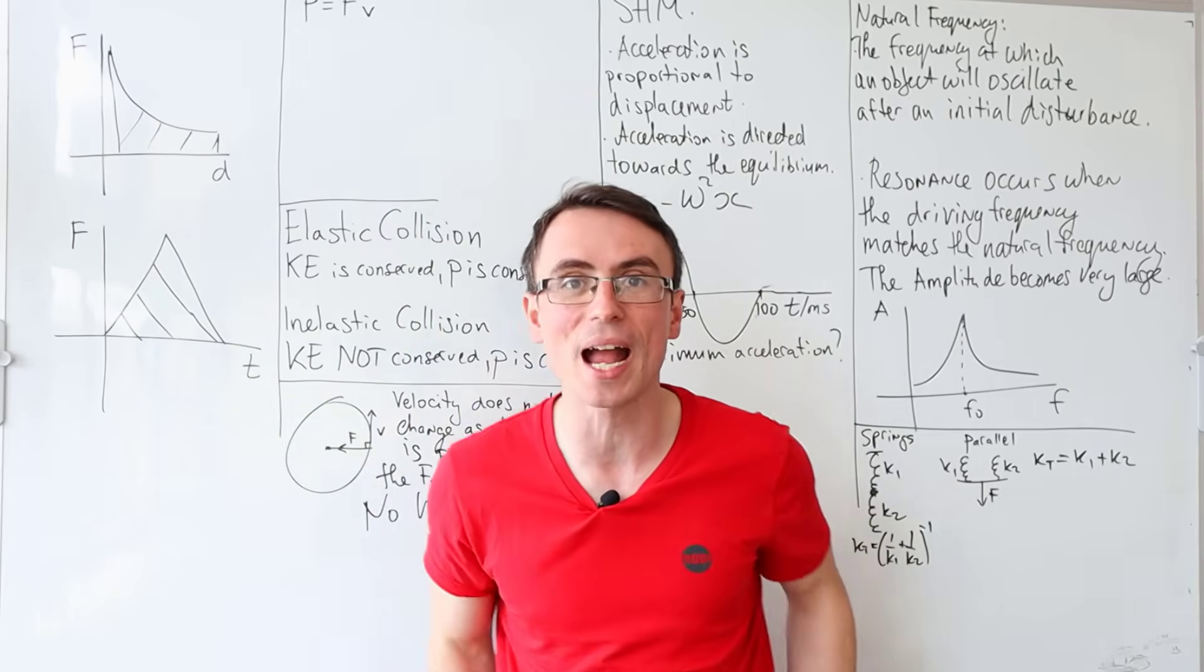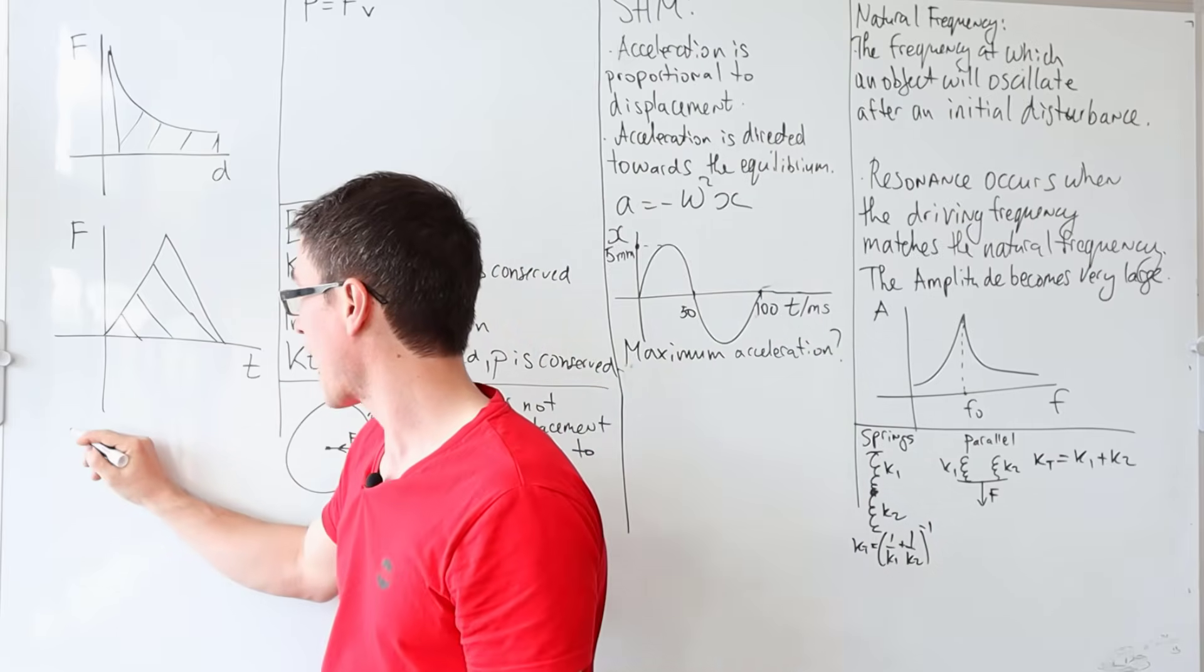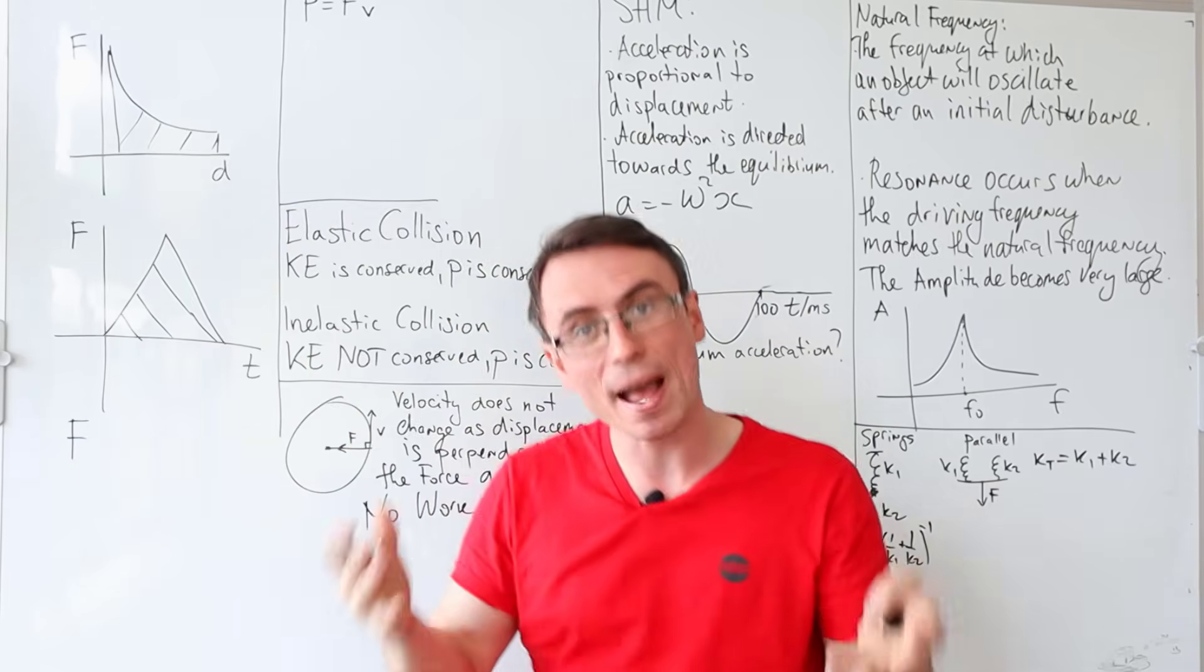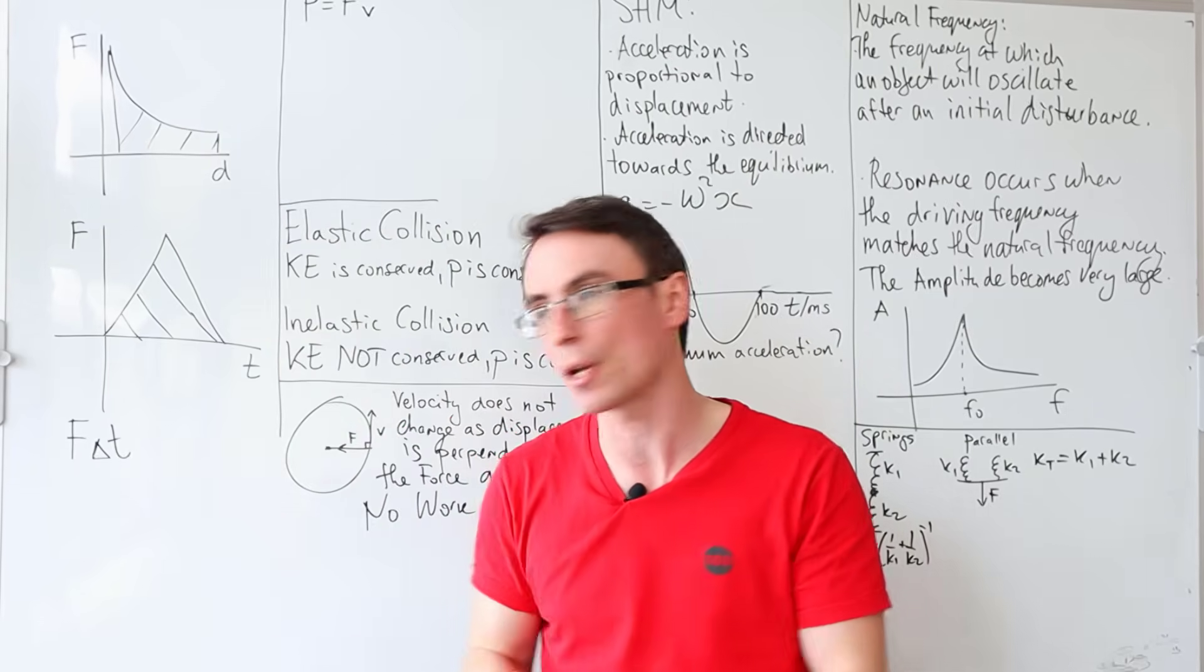the area underneath the graph is the impulse. The impulse is defined as the average force multiplied by the time that it acts on the object.